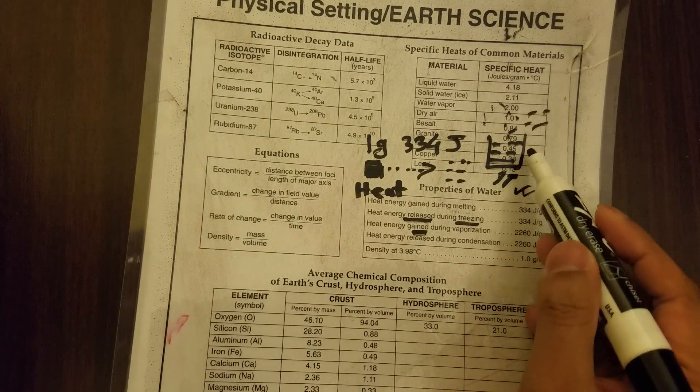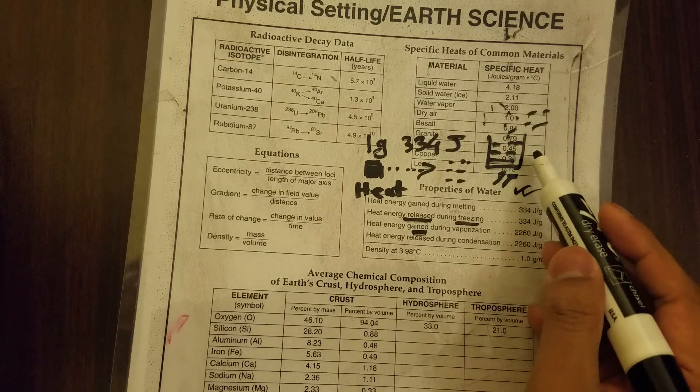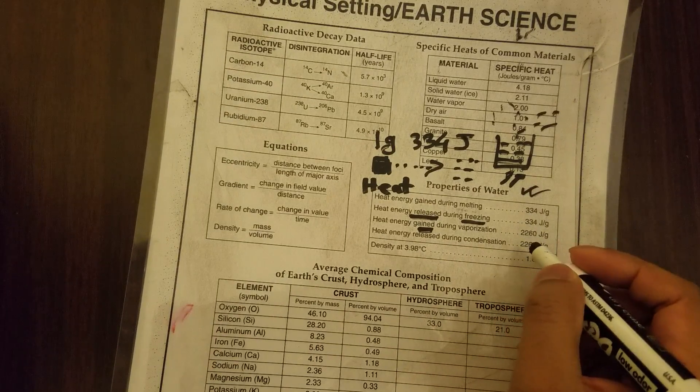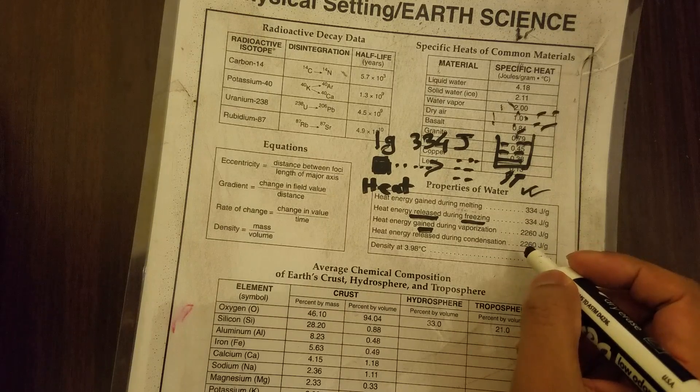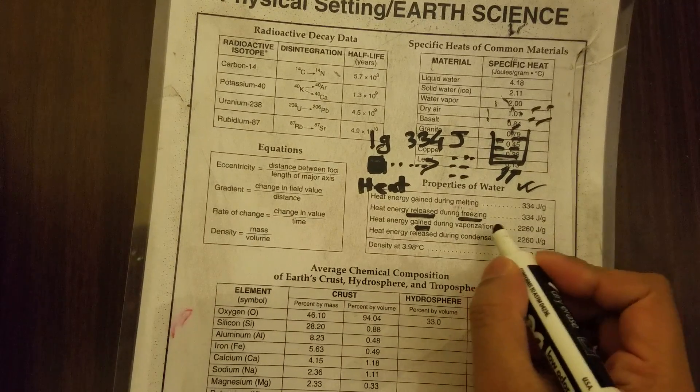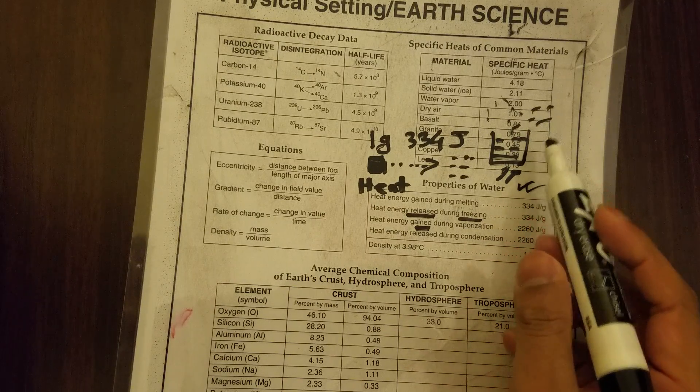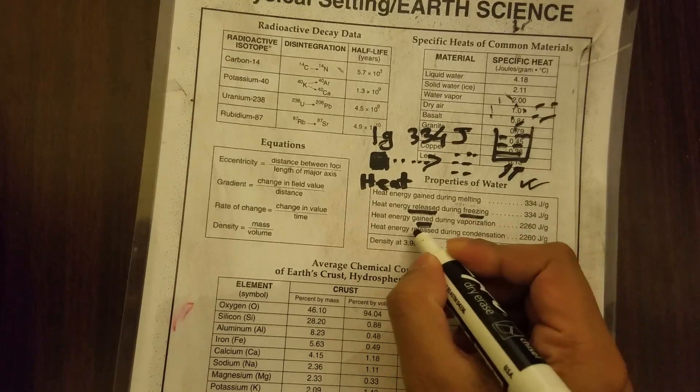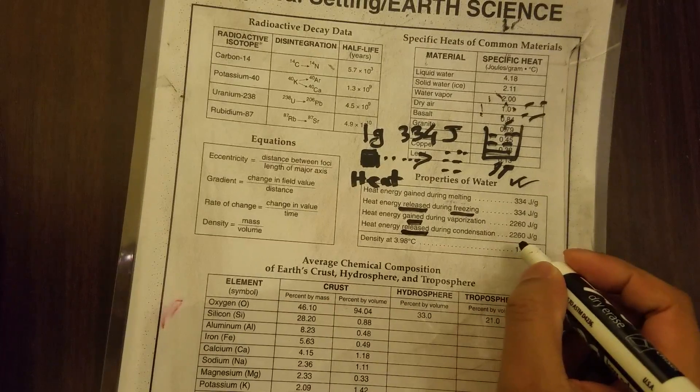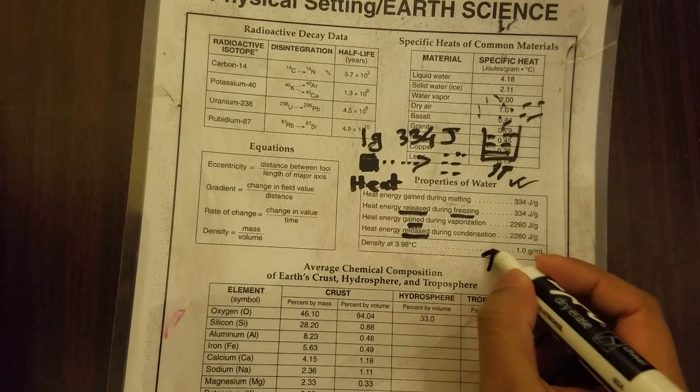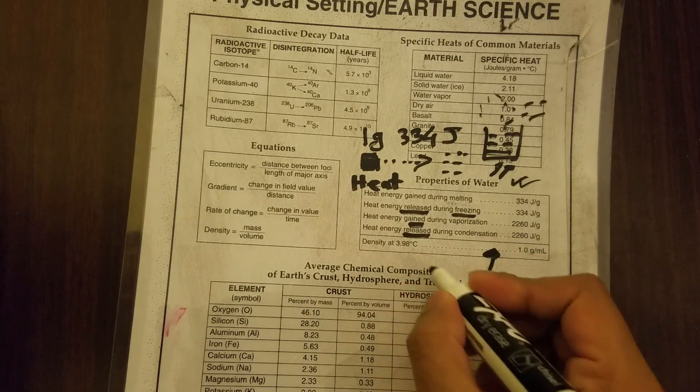So if you have one gram of water, you are gaining 2260 joules. Condensation means you are going back to the water state from the gas state and this time you are releasing this energy, same 2260. That's the four lines.